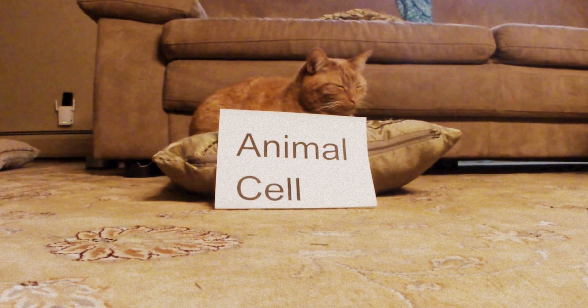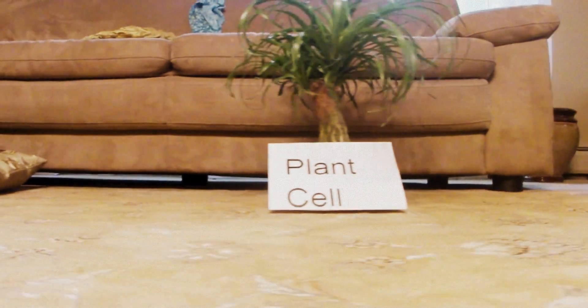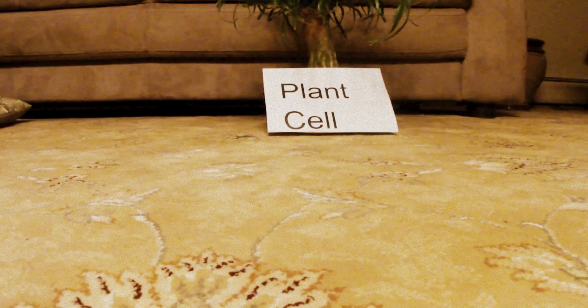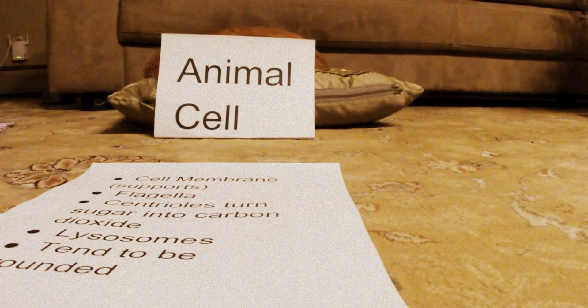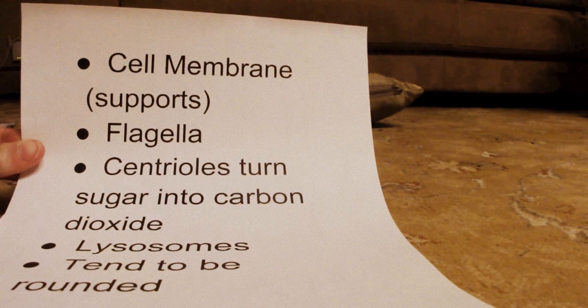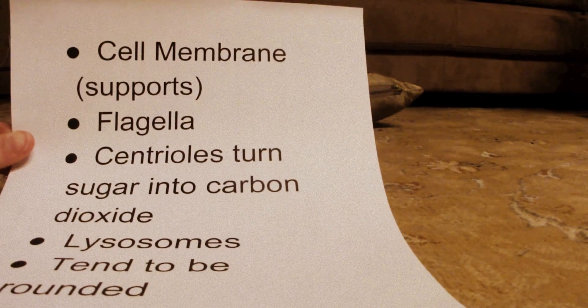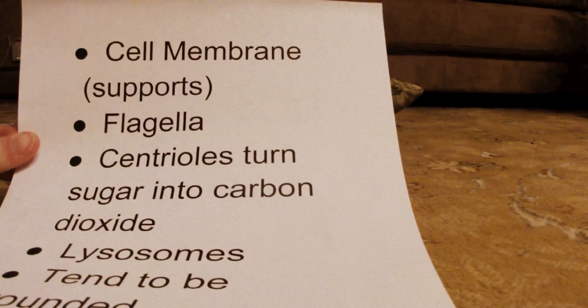Over here we have the animal cell and over here we have the plant cell. From the plant cell we move on to the animal cell and things that are specific to it. First we have the cell membrane, which controls what can enter and leave the cell as well as supports the cell.